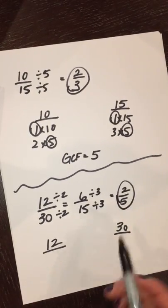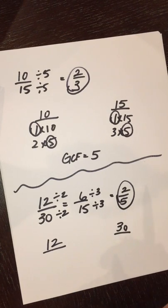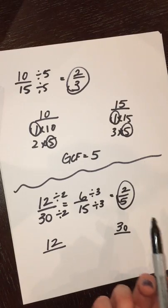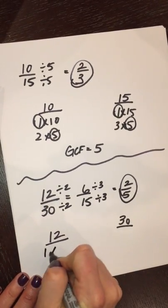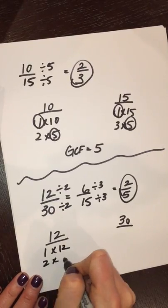It just so happens those are prime numbers, too. It doesn't always work out that way with simplest form, but that also gives you another clue that you have reached simplest form. I'm just going to show you something else really quickly. Let's say you did want to do it this way.